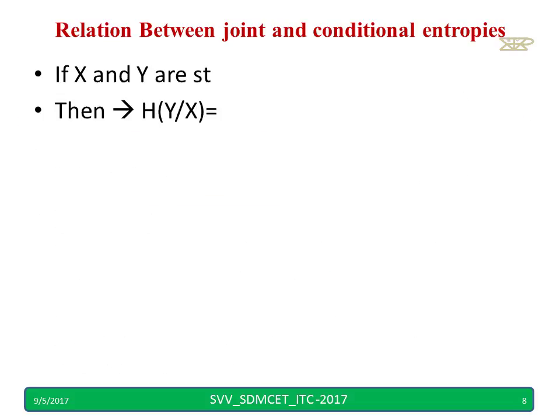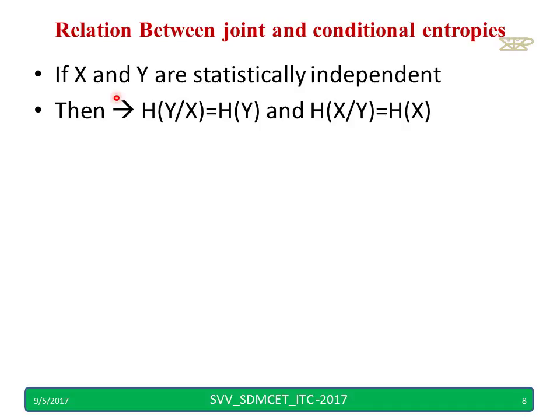If X and Y are statistically independent, then no doubt H(Y|X) will be H(Y) only. Similarly, there is no dependency on X. And similarly, H(X|Y) equals H(X) because it does not depend on Y.